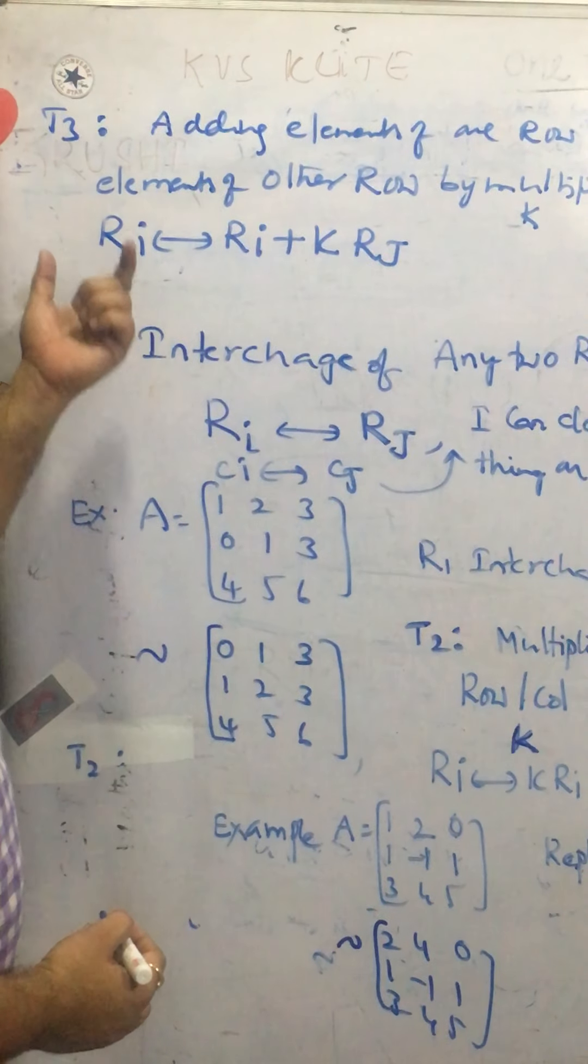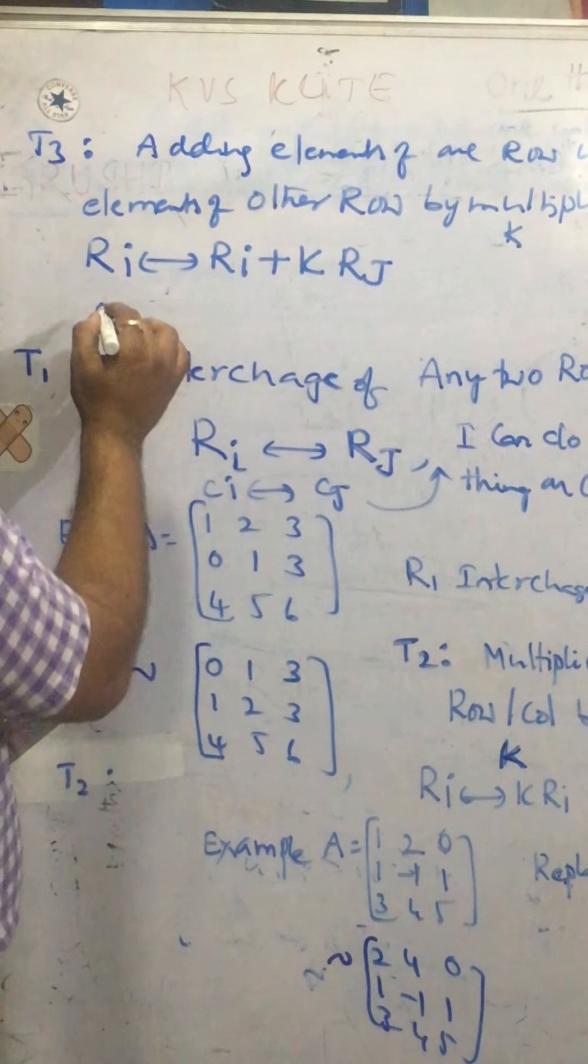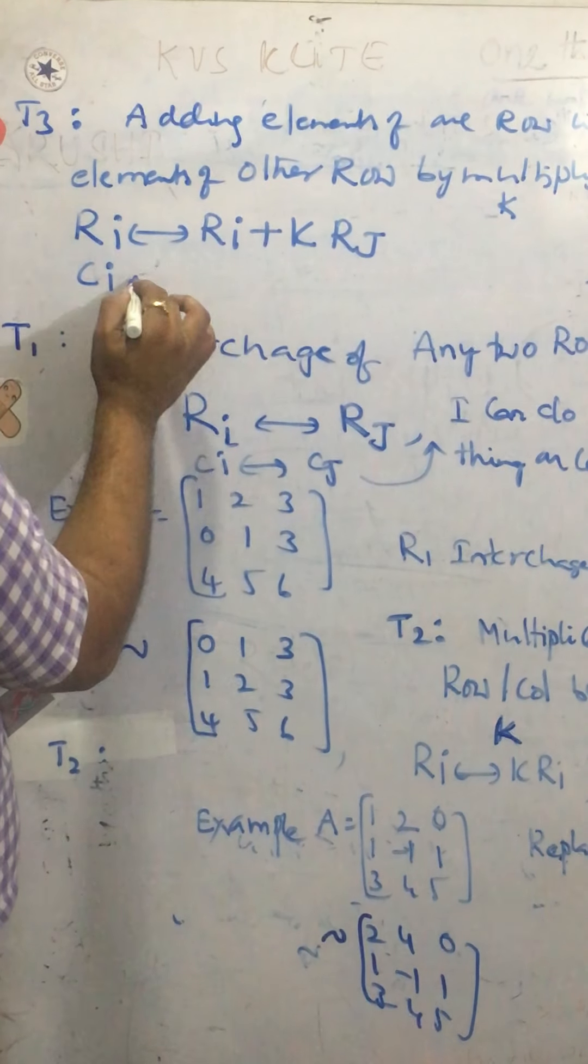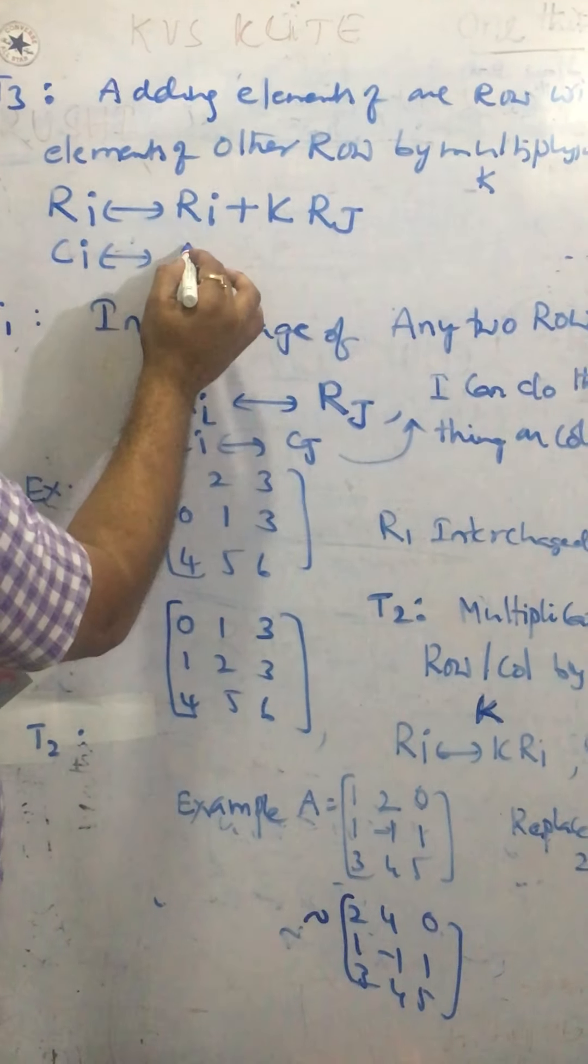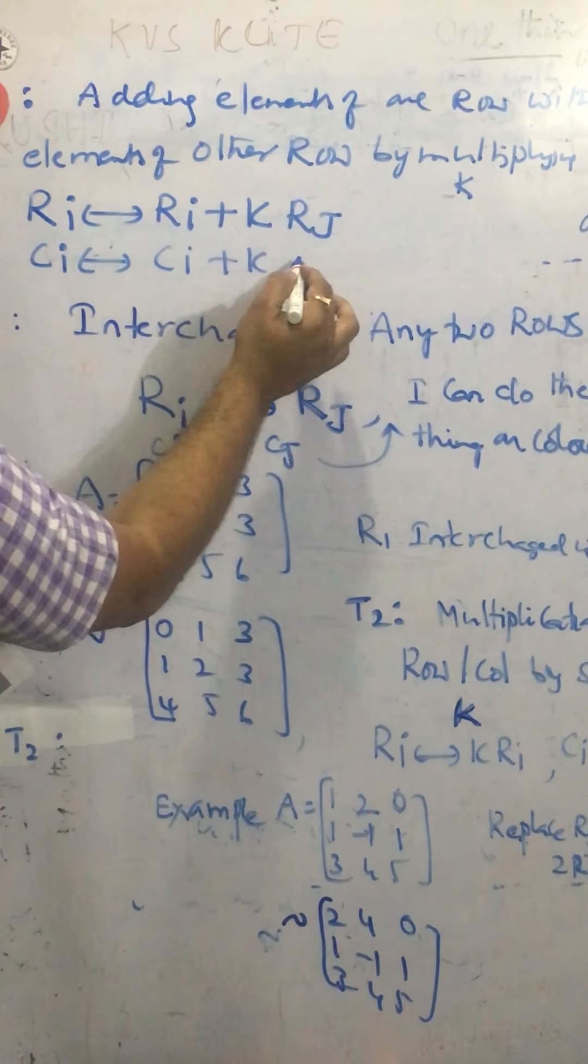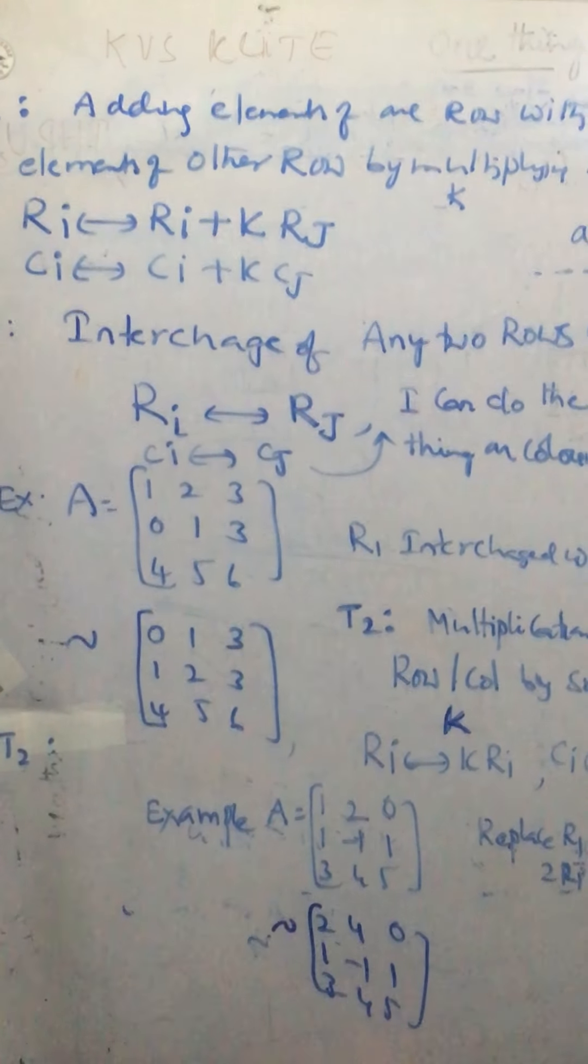So this is the symbol I can use on the rows. Similarly, if I want to write the same symbol on columns, means CI replaced by CI plus K times of CJ.